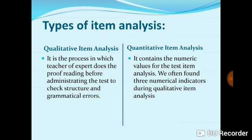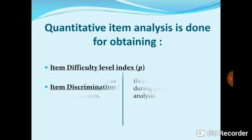The second category is quantitative item analysis. From the word 'quantitative,' we get the idea that it deals with numeric values. We often find three numerical indicators in item analysis, but here we talk about only two which are very important: obtaining the difficulty level index — how difficult an item is to attempt — and item discrimination, which means differentiating between weak and high-ability students.